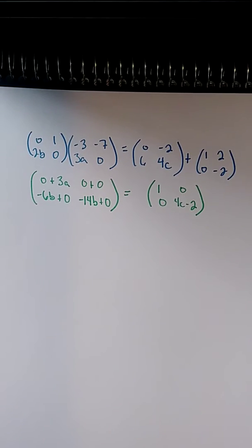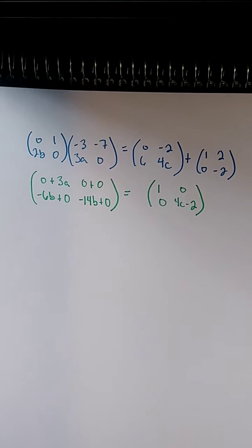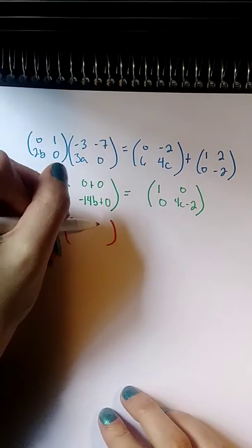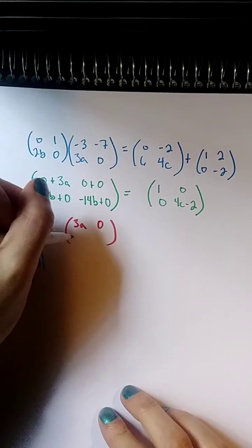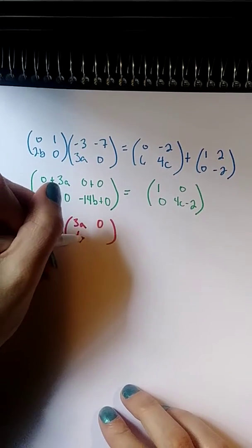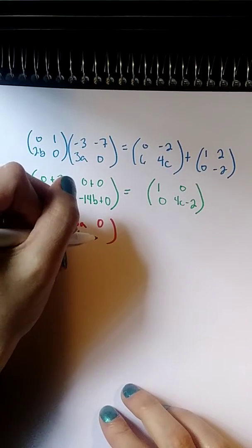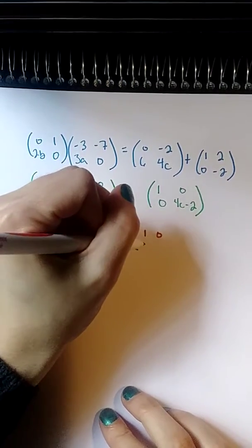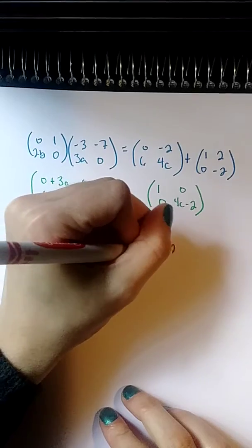Okay. We're ready to simplify the left a little bit. Let's go ahead and simplify here. I have 0 plus 3a. That's just 3a. 0 plus 0, that's just 0. -6b plus 0 is just -6b. And -14b plus 0 is just -14b. On the right, I've got 1, 0, 0, and 4c minus 2.